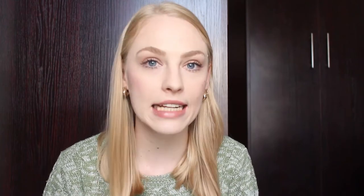Before we get into an actual magnetic declination calculation, there are a few things that you need to keep in mind. The first thing is that 60 minutes make up one degree. This is important for our conversions later on.